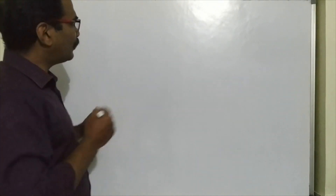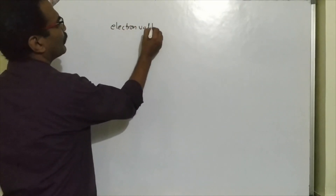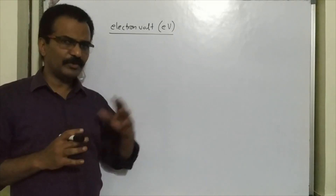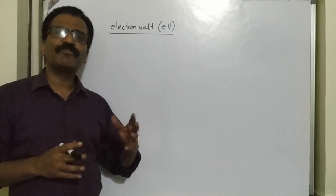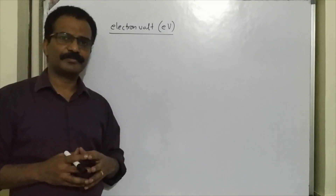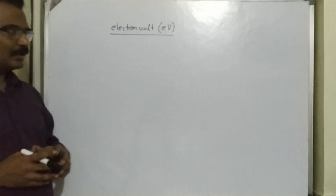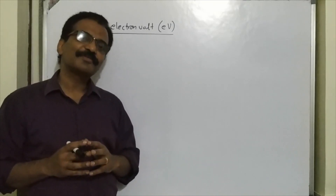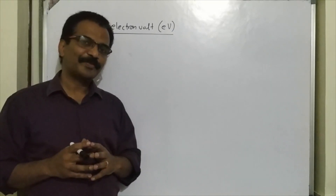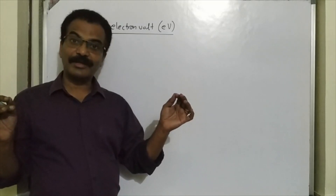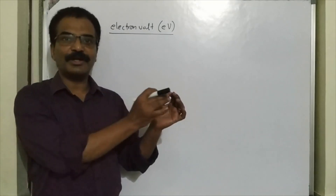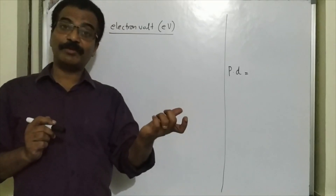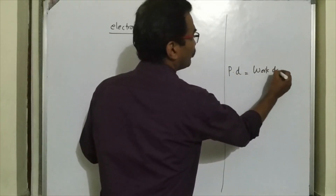Now let us go for another unit of energy: the electron volt. Electron volt is a small unit of energy, generally used when talking about energy of elementary particles like protons and electrons. Before defining electron volt, recall from 9th standard: potential difference between two points is the work done to carry unit positive charge from one point to the other — that is, work done per charge.